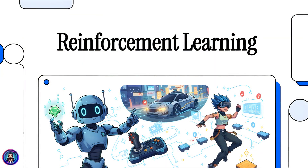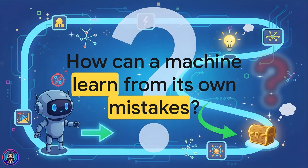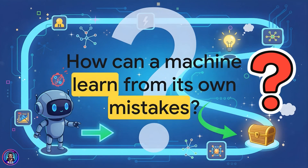Today we're going to dive into that amazing world of reinforcement learning. The big question: how can you get a machine to explore a brand new world, figure out what works and what doesn't, and get better over time all by itself? It all comes down to this really powerful feedback loop of actions and consequences.